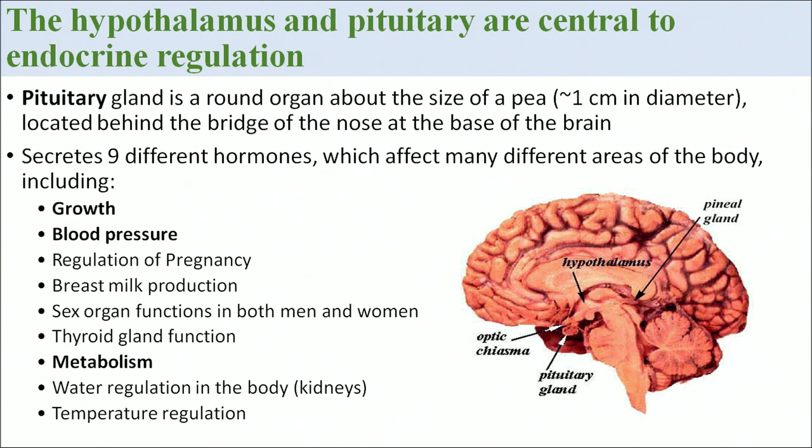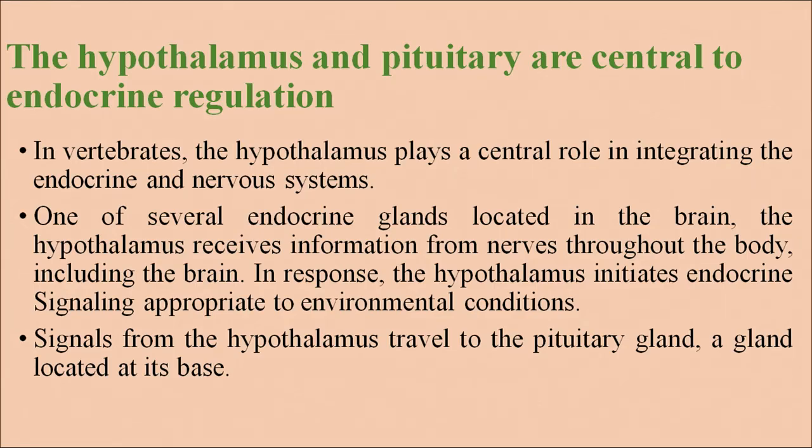The hypothalamus and pituitary are the centers of endocrine regulation. In vertebrates, the hypothalamus plays a central role in integrating the endocrine and nervous systems. Located in the brain, the hypothalamus receives information from nerves throughout the body and in response initiates endocrine signaling appropriate to the environmental condition, which then travels to the pituitary gland.